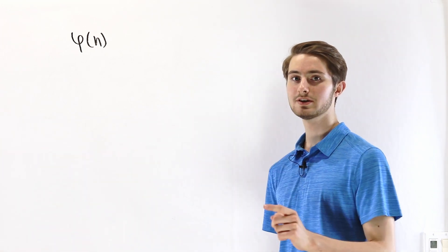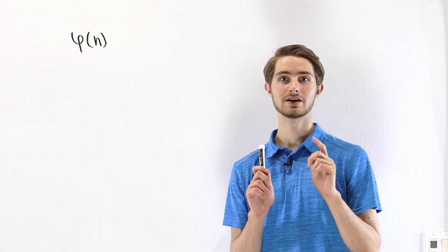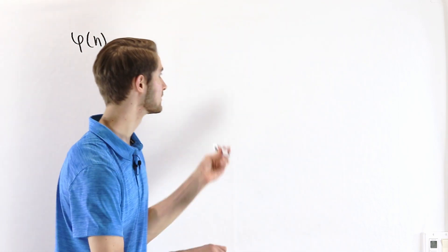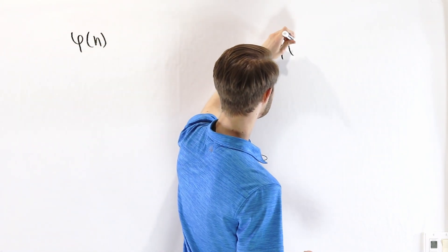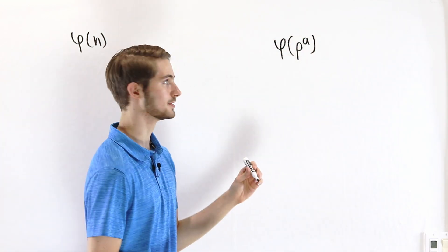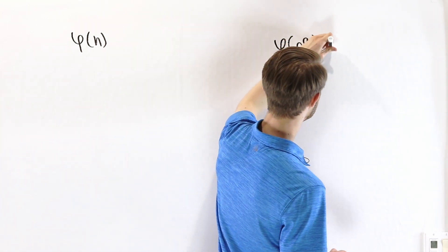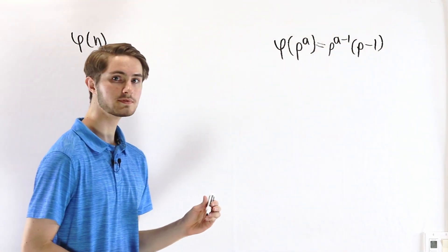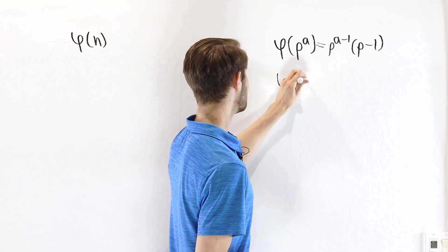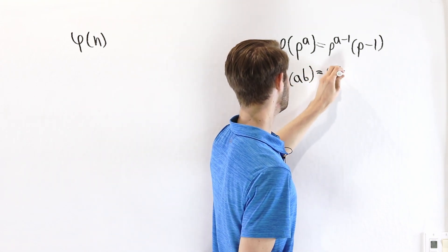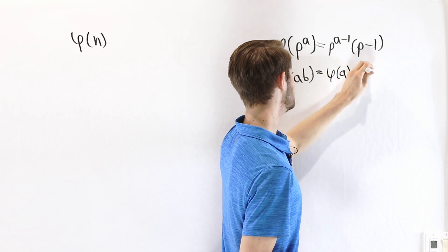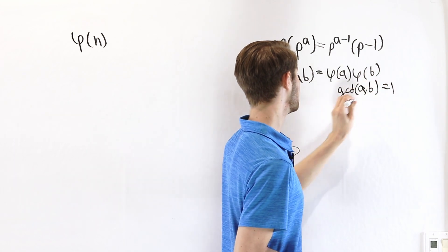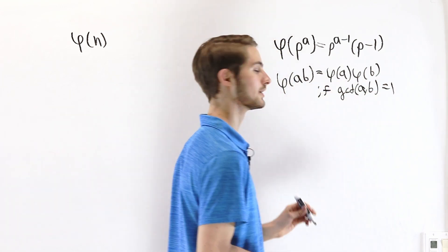And in order to derive it, we're going to need two important results that I've derived in previous videos. The first is that phi of some power of a prime number is equal to p to the a minus 1 times p minus 1. And the second identity is that phi of a times b equals phi(a) times phi(b) if the greatest common divisor of a and b equals 1. In other words, if they are co-prime.